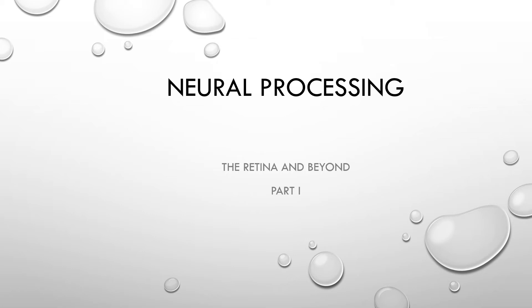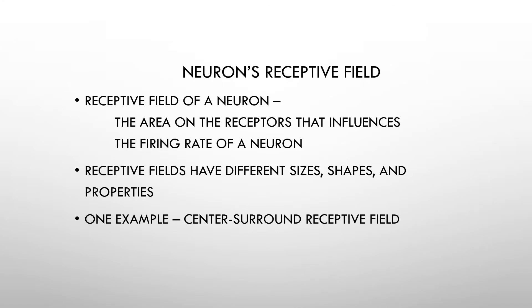I'm going to talk about the retina and beyond today, and I'm going to try to get us to the visual cortex in this neural processing. We're going to start by explaining what's happening at the retina and the subcortical structures that the retina communicates to. A really important concept, whether you are going on in the sensation and perception field, or in medicine, or in physical therapy, is this idea of a neuron's receptive field.